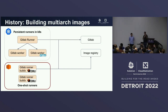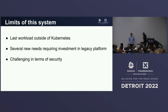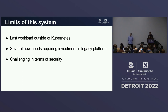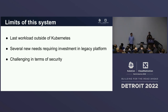Today the talk is going to focus on how we build images and how we transition to Kubernetes. This system was starting to show its limits — it was the last workload running outside of Kubernetes, which was starting to be a pain for the team managing it, because everything else was managed by a single team doing everything on Kubernetes. This team had to manage dedicated instances outside of Kubernetes for these workloads.